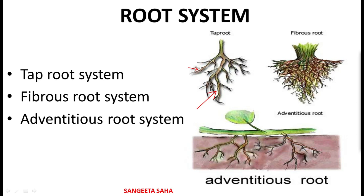Now coming to the fibrous root system. This type of root system is mainly present in monocotyledonous plants. The primary root is short-lived after germination and is replaced by a large number of roots, as you can see in the diagram. Unlike the tap root, it does not have any primary root. Such roots constitute the fibrous root system and it is commonly found in grasses, wheat, and paddy.